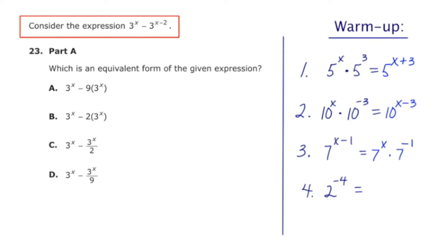The next skill that you need to know to do this problem is the rules of negative exponents. So in number four, we're asked to simplify 2 to the negative fourth. Well this becomes 1 over 2 to the fourth. And 2 to the fourth is 16, making the answer to this 1 sixteenth.